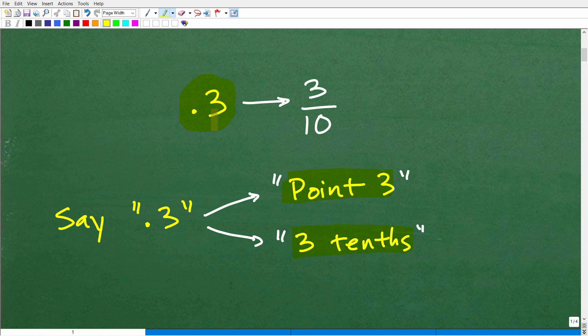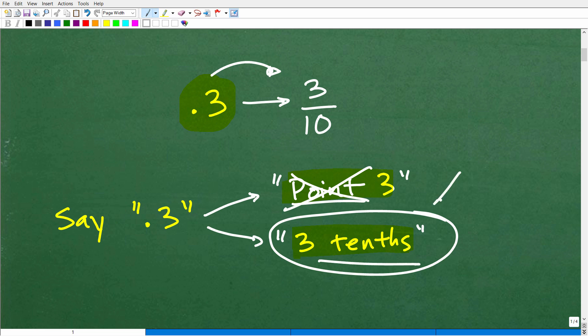Okay, so you could say this as 3 tenths or 0.3. Well, we want to say decimals that we want to turn into fractions this way. Okay, 3 tenths. We don't want to use this point. That's not going to help us out. We want to say this is 3 tenths. So in order for you to be able to recognize that this is 3 tenths, you need to understand place value.